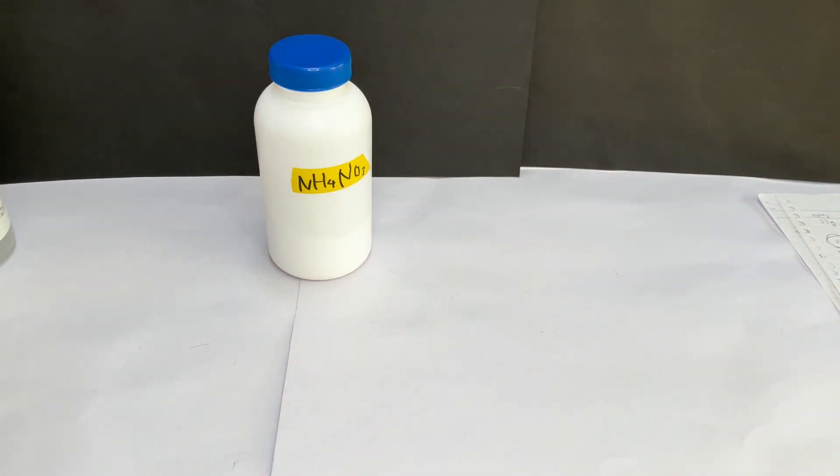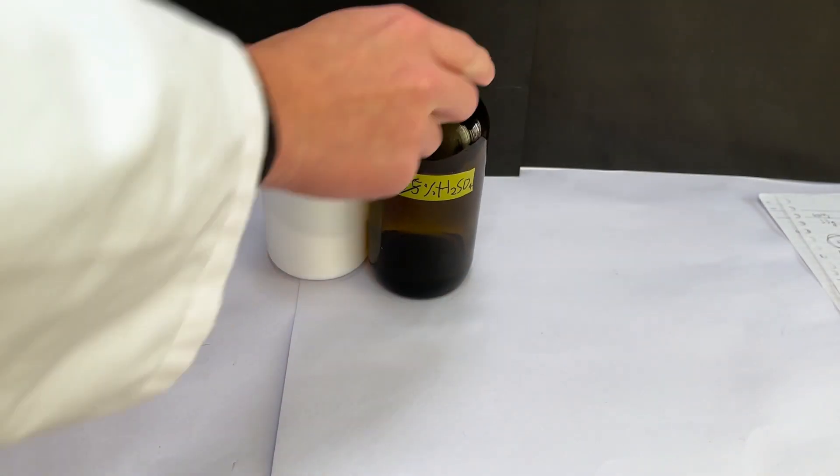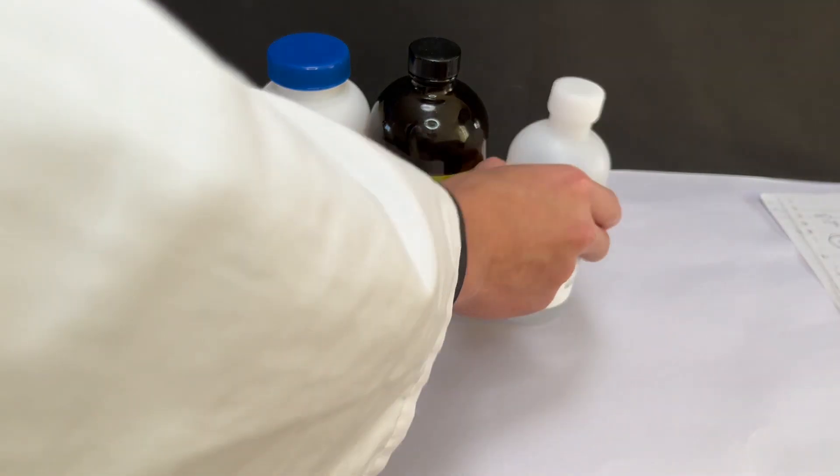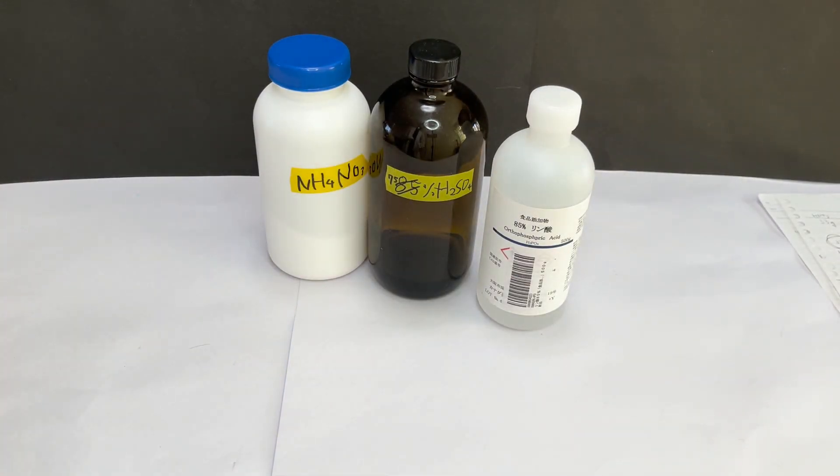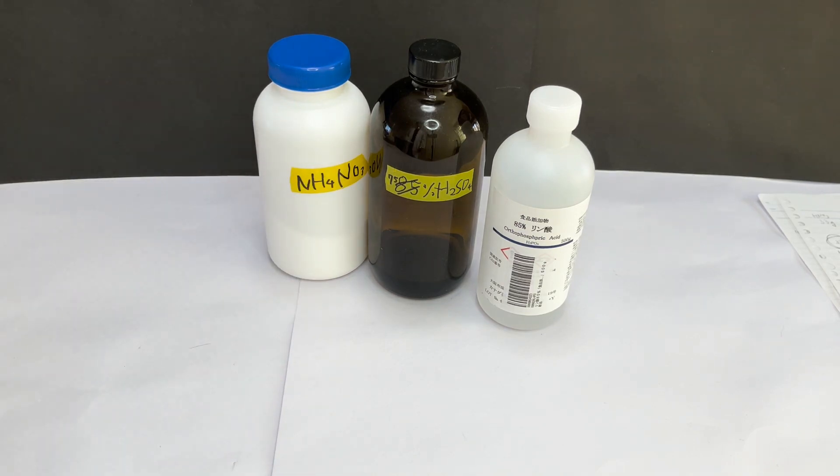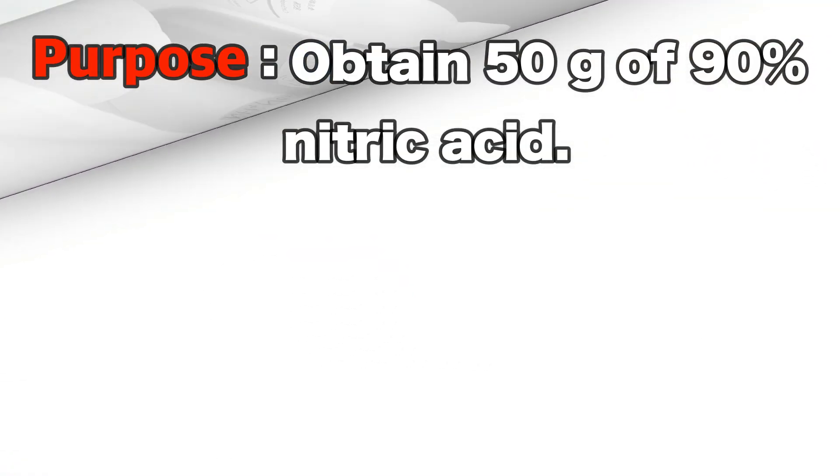In this experiment, I'm gonna use ammonium nitrate and 75% sulfuric acid that I have concentrated from 10% sulfuric acid, and I'm also going to use 85% phosphoric acid. This experiment's purpose is to obtain 50 grams of 90% nitric acid.